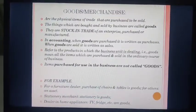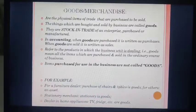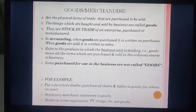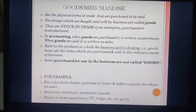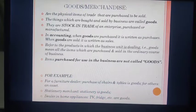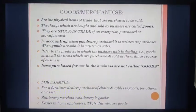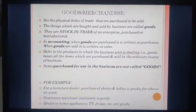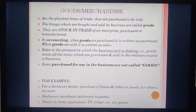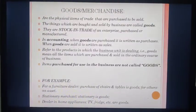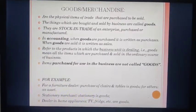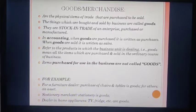In other words, goods are the stock and trade of an enterprise which are purchased or manufactured. In accounting, when goods are purchased it is written as 'purchases', and when goods are sold it is written as 'sales'. Goods refers to all the products in which the business unit is dealing — that is, all items purchased and sold in the ordinary course of business.